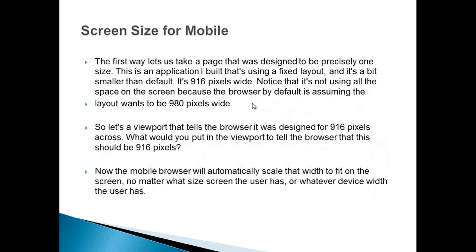The first way is for a page designed to be precisely one size. Here is an application built using a fixed layout — it's 916 pixels wide. Notice that it's not using all the space on the screen because the browser by default assumes the layout wants to be 980 pixels wide. So we set a viewport that tells the browser it was designed for 916 pixels across. The mobile browser will then automatically scale that width to fit on the screen, no matter what size screen or device width the user has.